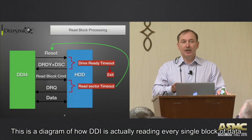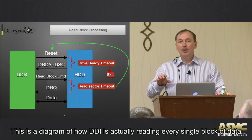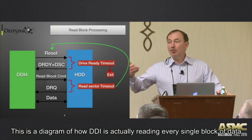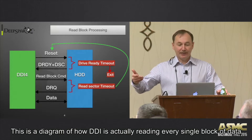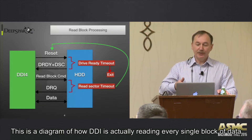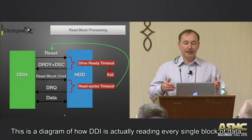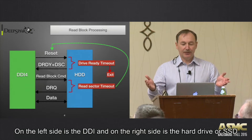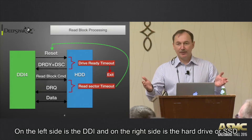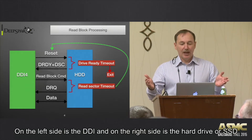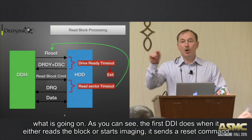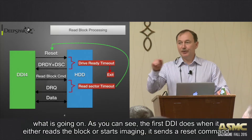This is a diagram of how DDI actually reads every single block of data. On the left side is DDI, on the right side is a hard drive or SSD, and all the errors shown represent the process — what is going on.